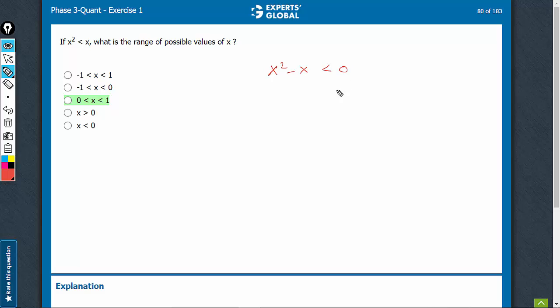x squared minus x is less than 0. x into x minus 1 is less than 0. Draw it on the number line. The two nodes are 0 for x equal to 0 and 1 for x minus 1 equal to 0.